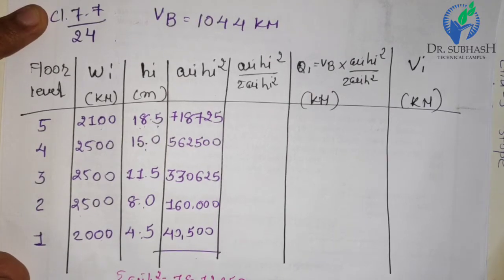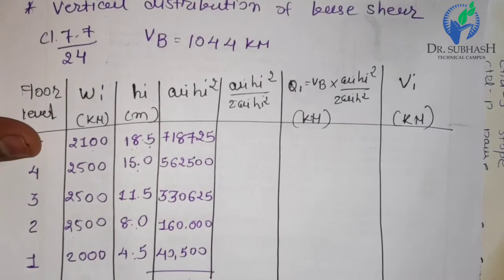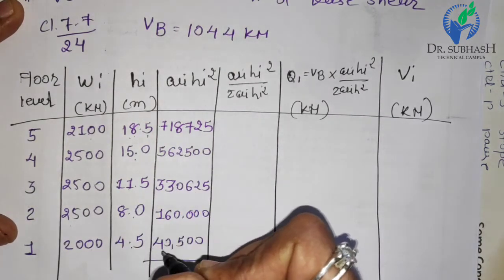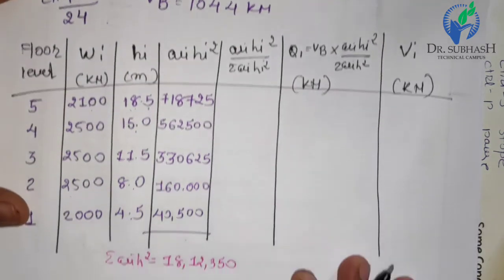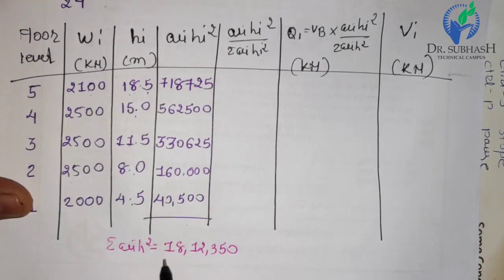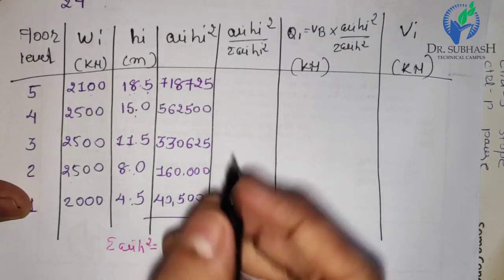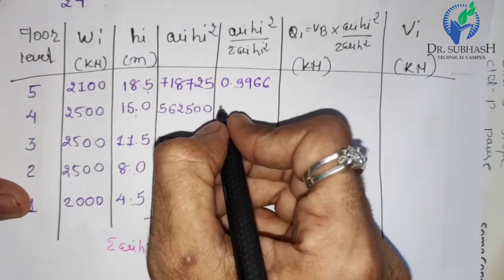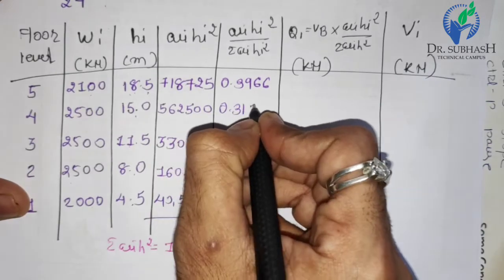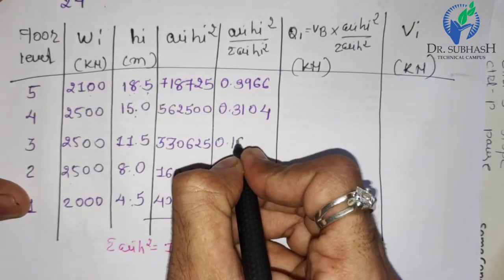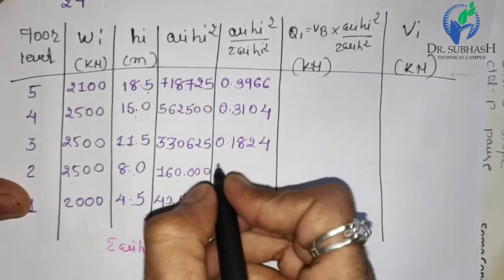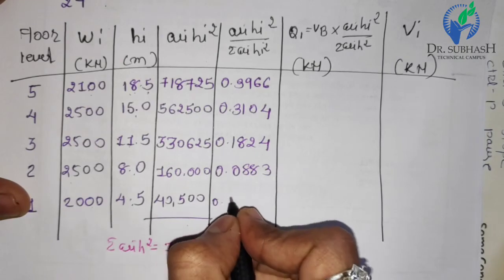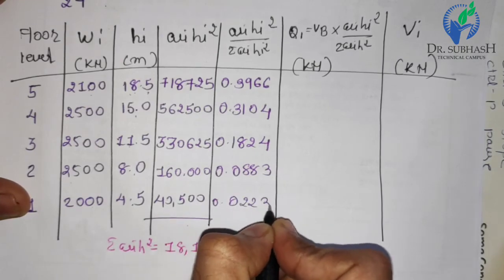The next column is WI·HI² divided by the total summation 1,812,350. The five ratio values are: Story 5: 0.3966; Story 4: 0.3104; Story 3: 0.1824; Story 2: 0.0883; Story 1: 0.0223.